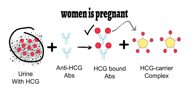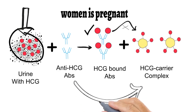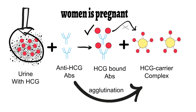Since HCG molecules were present in the urine, all the antibodies added will be engaged with them, and there will be no free antibody left to bind the HCG-carrier complex. The HCG molecules from the urine have inhibited the agglutination reaction of the anti-HCG antibodies and the HCG-carrier complex — that's why the test is called the agglutination inhibition test. So no agglutination is the positive test, meaning the woman is pregnant.